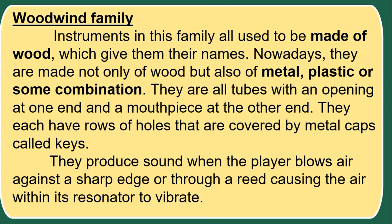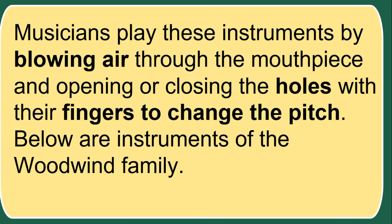The woodwind family instruments all used to be made of wood, which gives them their name. Nowadays they are made not only of wood but also of metal, plastic, or some combination. They are all tubes with an opening at one end and a mouthpiece at the other, each with rows of holes covered by metal caps called keys. They produce sound when the player blows air against a sharp edge or through a reed, causing the air within the resonator to vibrate. Musicians play by blowing air through the mouthpiece and opening or closing the holes with their fingers to change the pitch.